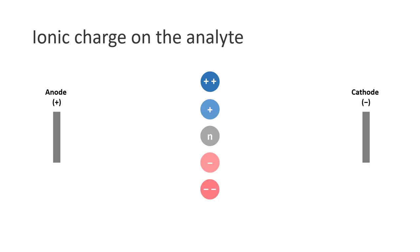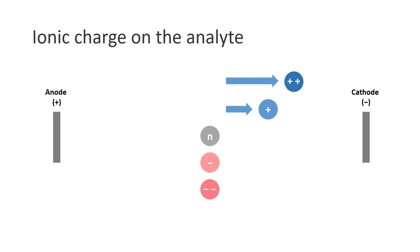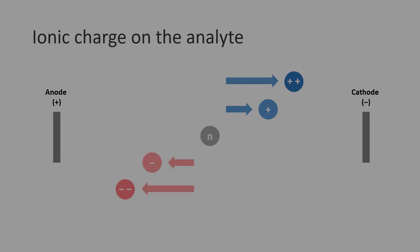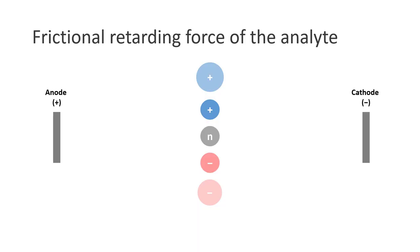First of all, the electrophoretic mobility is directly proportional to the ionic charge on the analytes. So if the analytes are of the same size, the cations that are more highly charged will move faster towards the negatively charged cathode, while the anions that are more highly charged will migrate faster towards the positively charged anode.